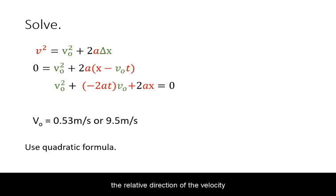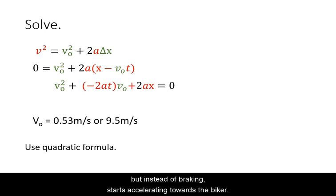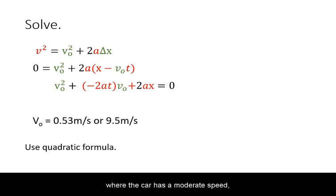Hence, the relative direction of the velocity and the acceleration are not immediately known. You need to look back at the drawing to check what these solutions might correspond to. The first solution actually would be a horrific scenario where the car starts out slow but instead of braking starts accelerating towards the biker. Instead, it is the second solution we are looking for where the car has a moderate speed and slams on the brake to avoid the collision.